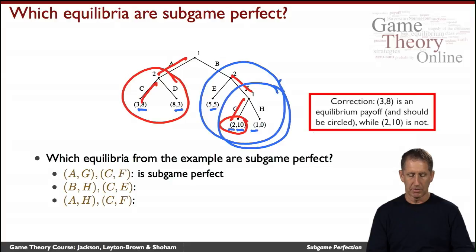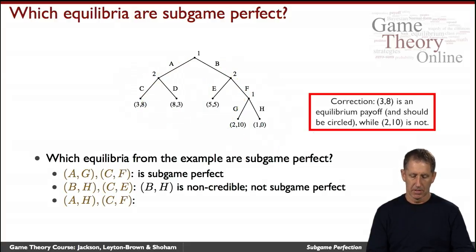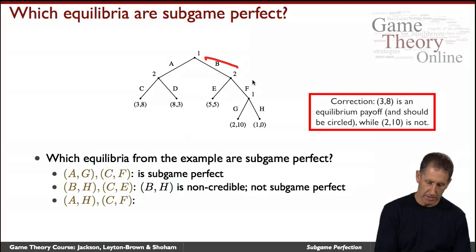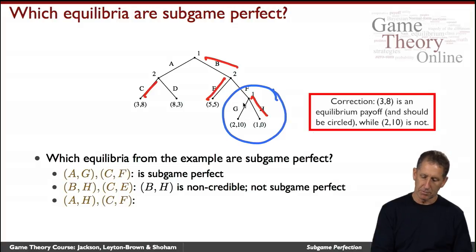How about B-H-C-E? Well, the claim is that it's not. Let's first write down the strategy B-H-C-E. This is not subgame perfect for the reasons we saw before. We saw that in this subgame right here there is a profitable deviation for Player 1, namely to deviate over here and get 2 rather than 1. So it's not subgame perfect.